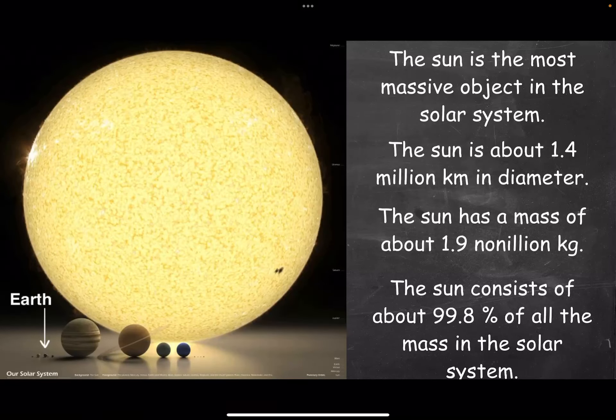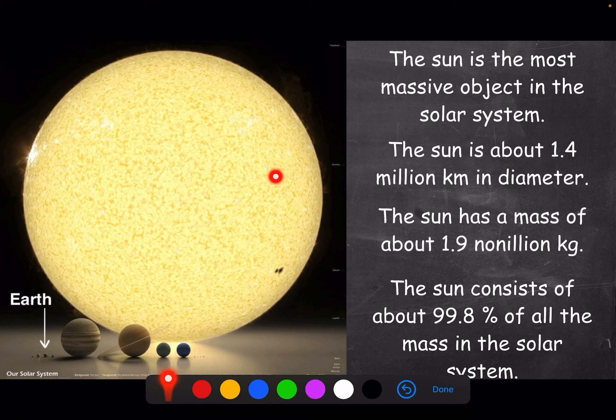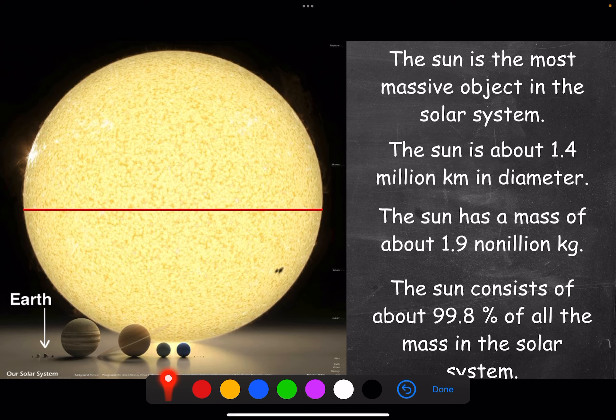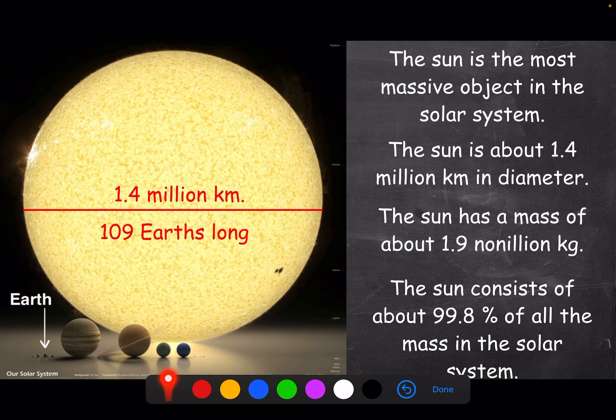The Sun is the most massive object in the solar system. I mean, just look how big it is in this image over here compared to the other planets. It makes them look tiny. The Sun is about 1.4 million kilometers in diameter. That's big enough to fit 109 Earths across the surface of the Sun.